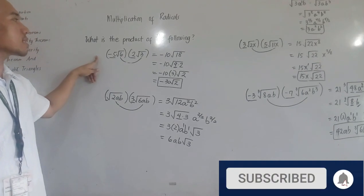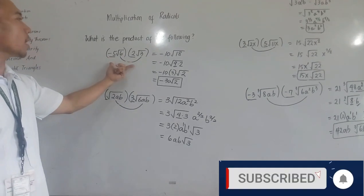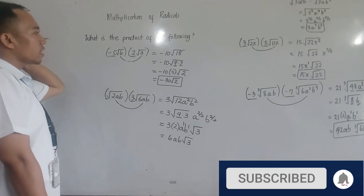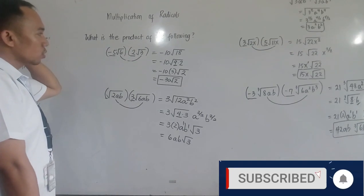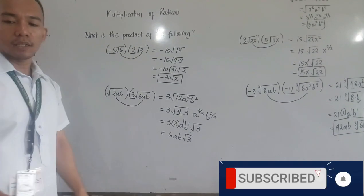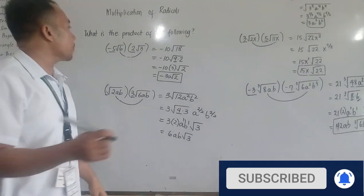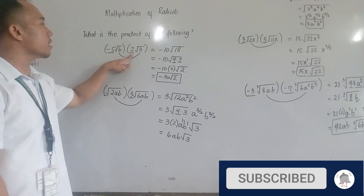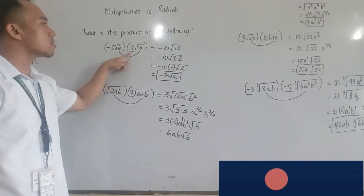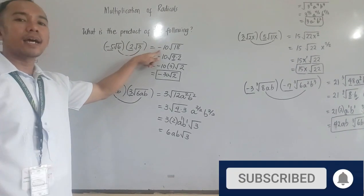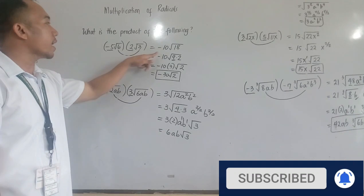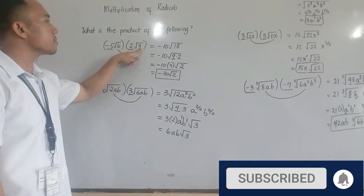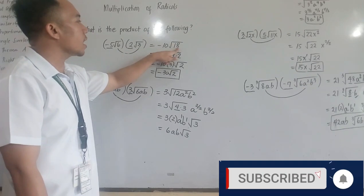Let's focus on the first example. How do we get the product of negative 5 square root of 6 times 2 square root of 3? If you need to get the product of this, multiply the coefficient first. So negative 5 times 2 is negative 10. Then multiply the two radicands: 6 times 3 is 18.